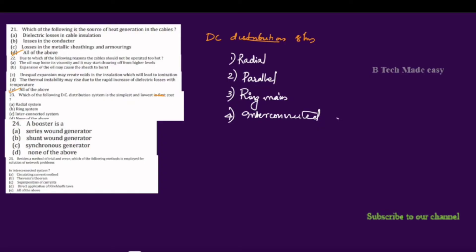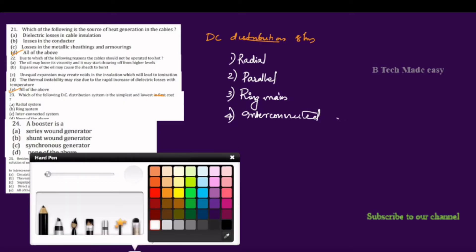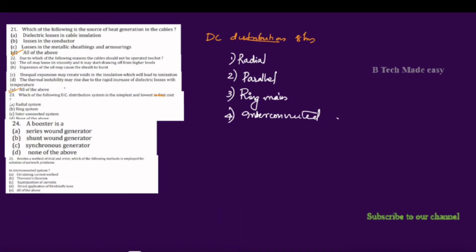The radial system — option A — is correct. The radial system is where power flow occurs in only one direction.